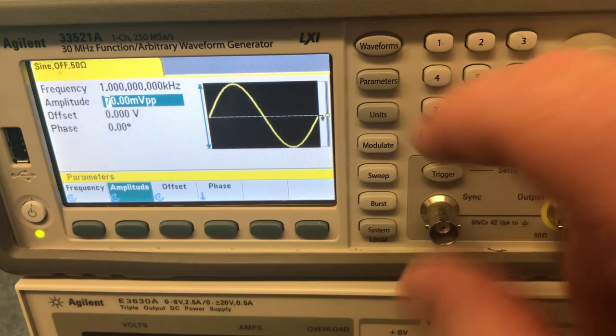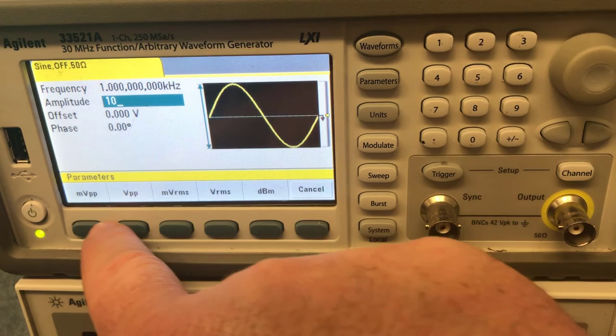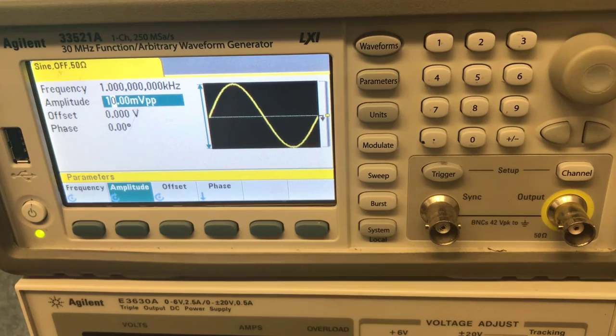Or if you prefer, if it's faster, you can just hit 1, 0 for 10, and then the units are millivolts peak to peak. So either of those is an equivalent way of setting it up.